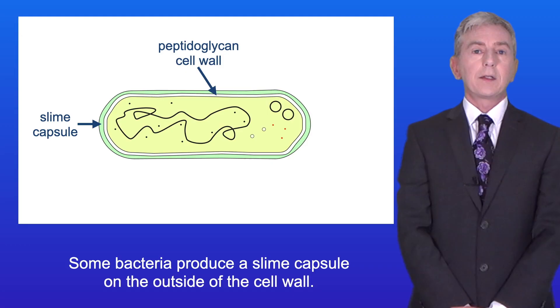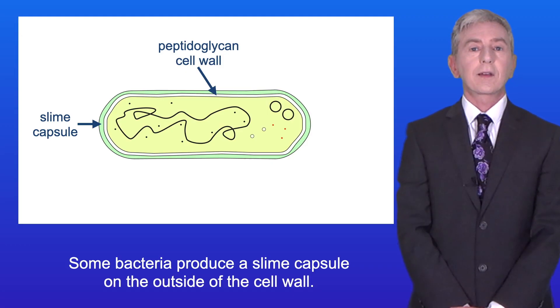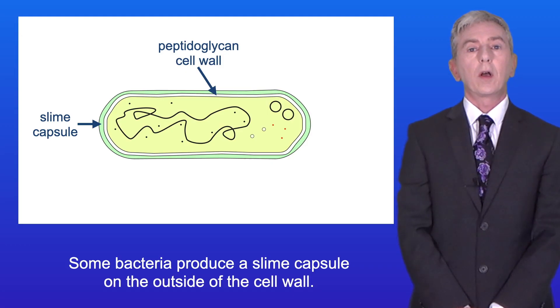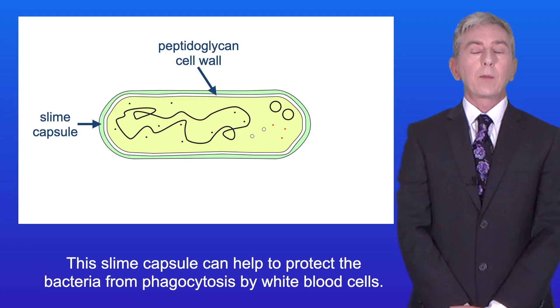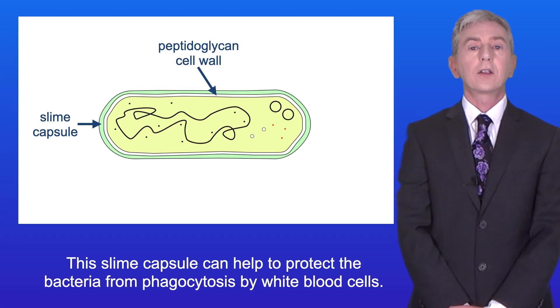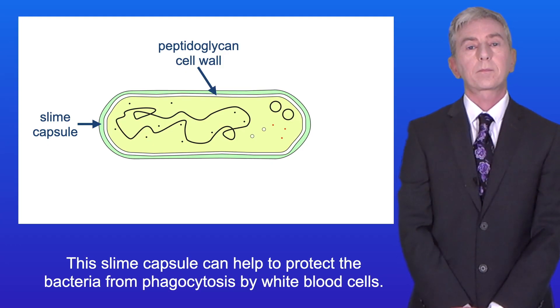Some bacteria produce a slime capsule on the outside of the cell wall. This slime capsule can help to protect the bacteria from phagocytosis by white blood cells.